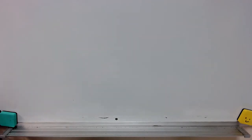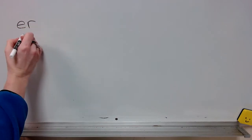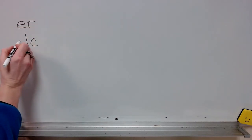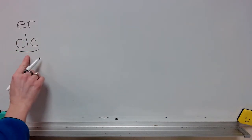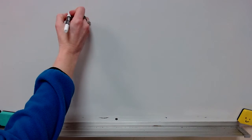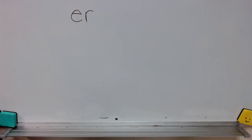Remember, our spelling this week has final syllables that end in er or le. The ones that end in le have that syllable shape of consonant-le that we talked about yesterday. Today we are going to be spelling words that end in er. They're two-syllable words.